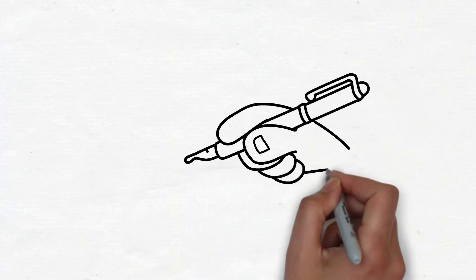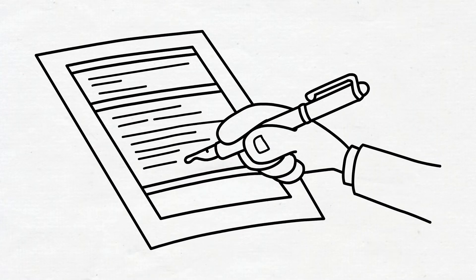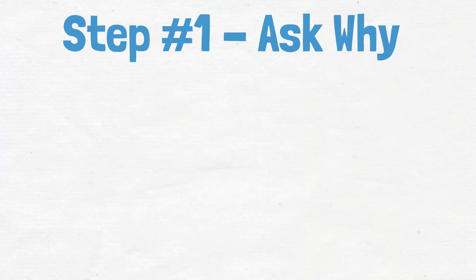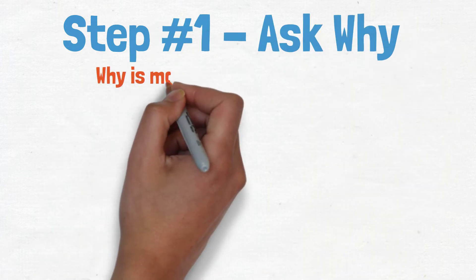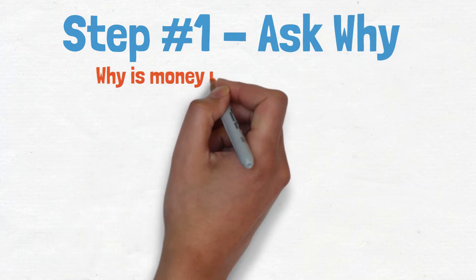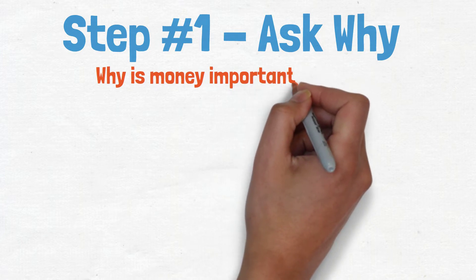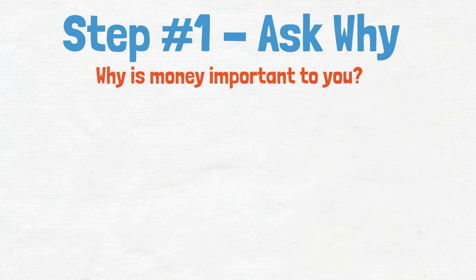Let's look at four steps to create a one-page retirement plan. Step number one: ask why. Why is money important to you? This is the first question you should ask yourself when creating your one-page retirement plan.